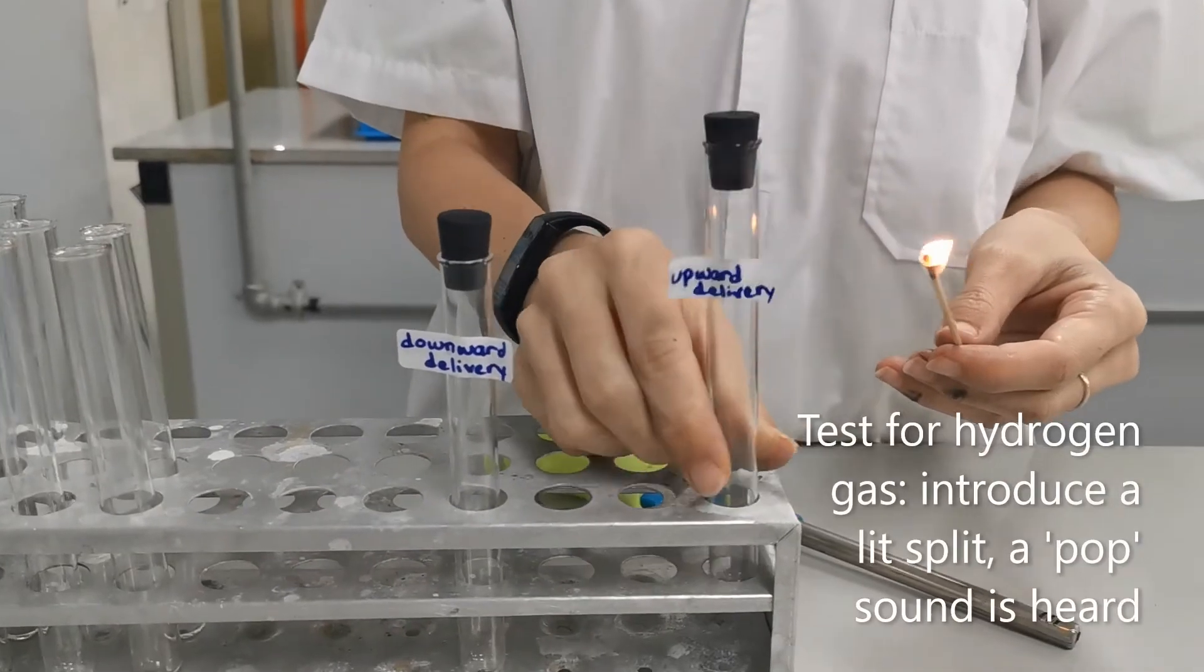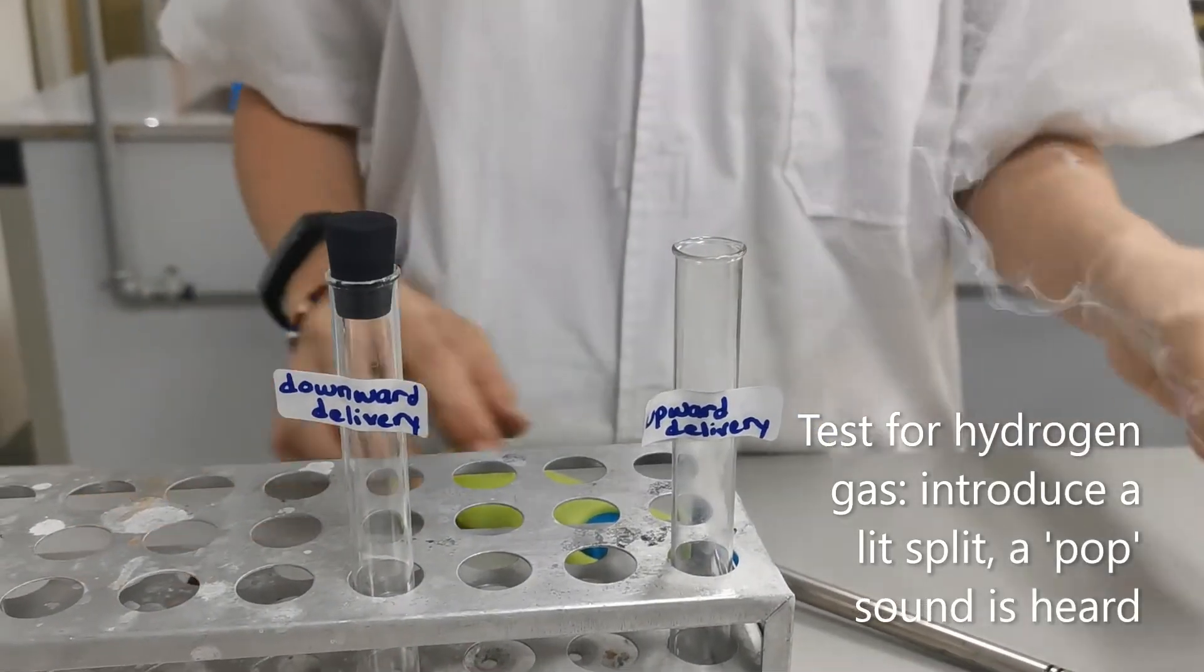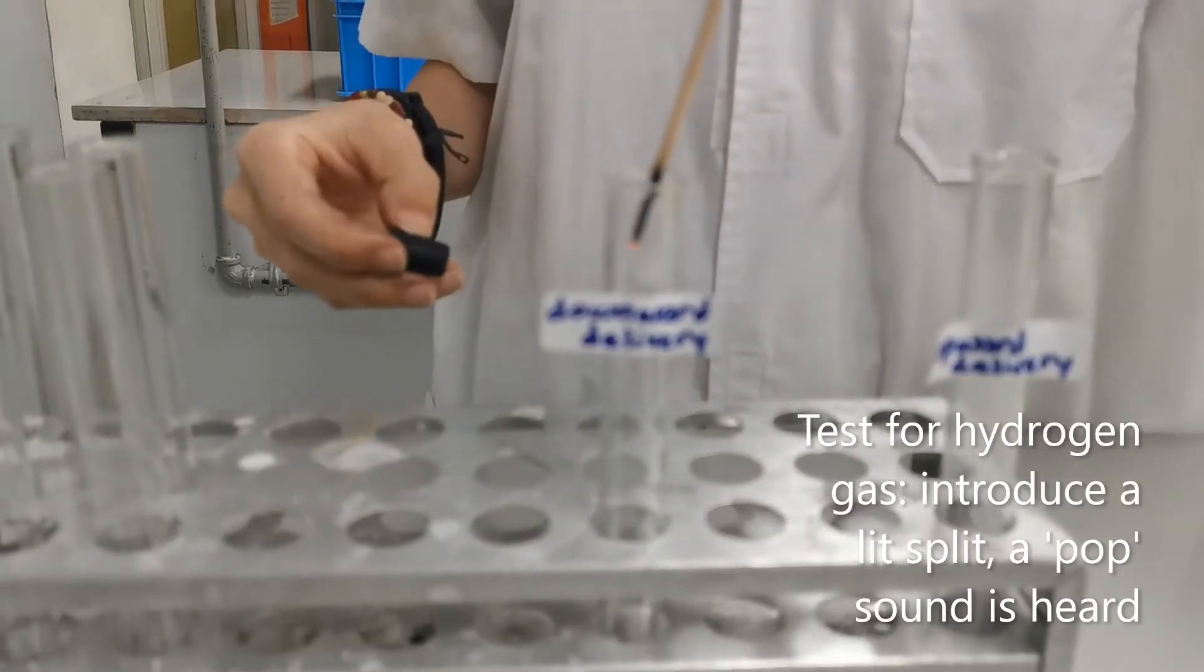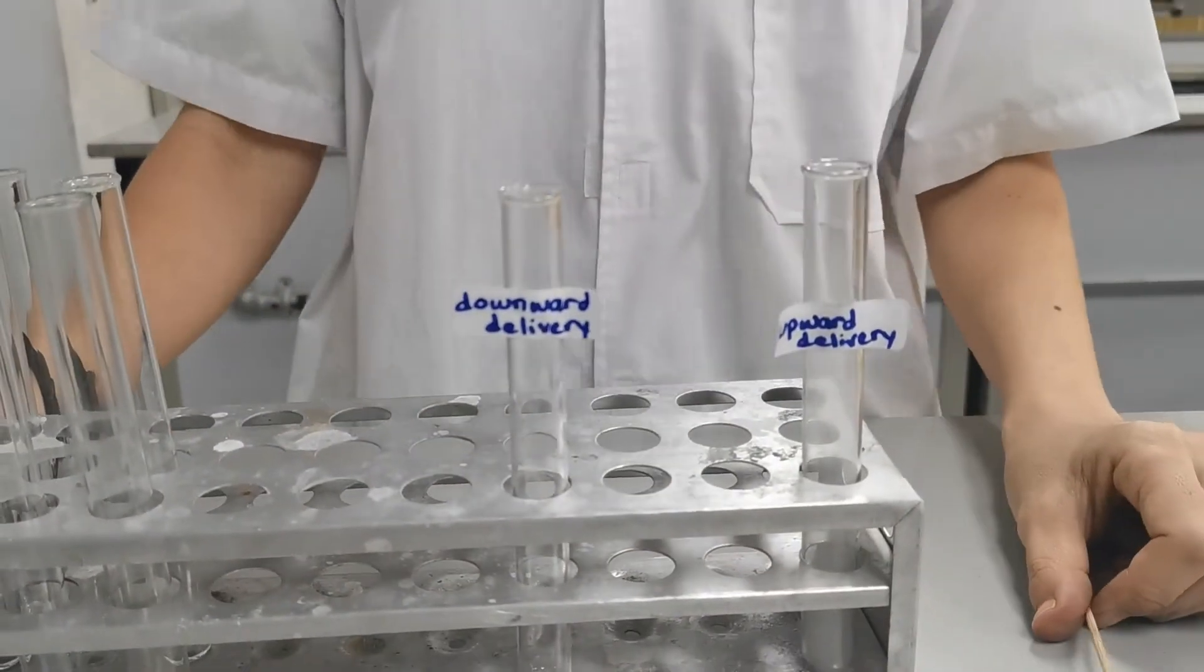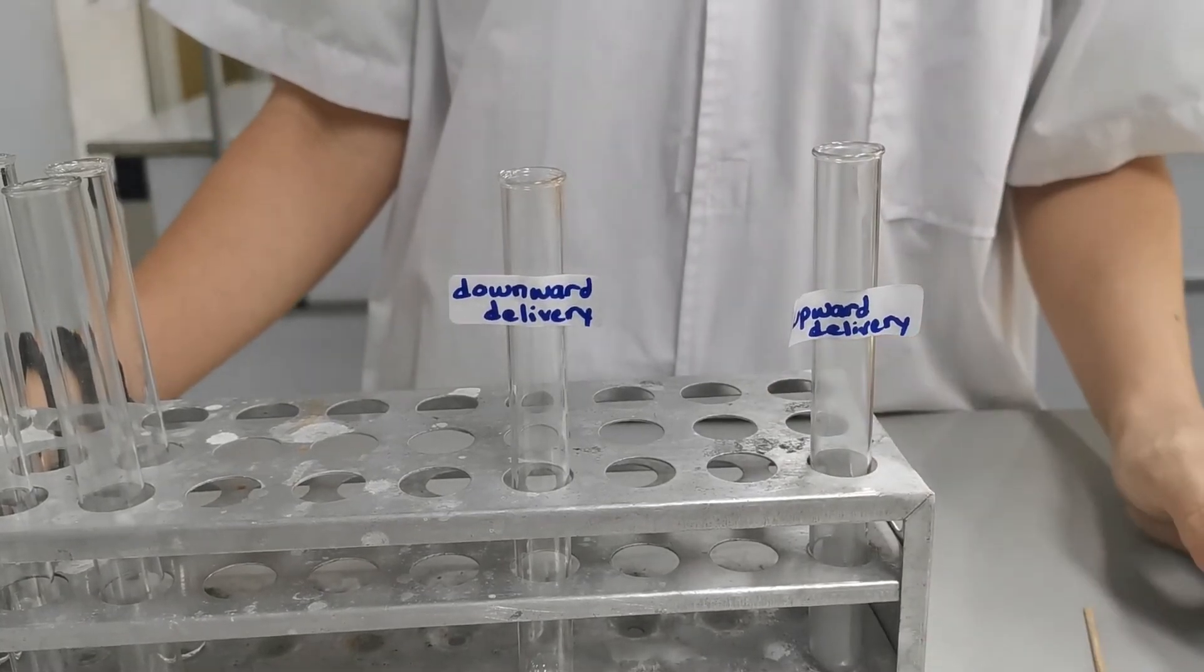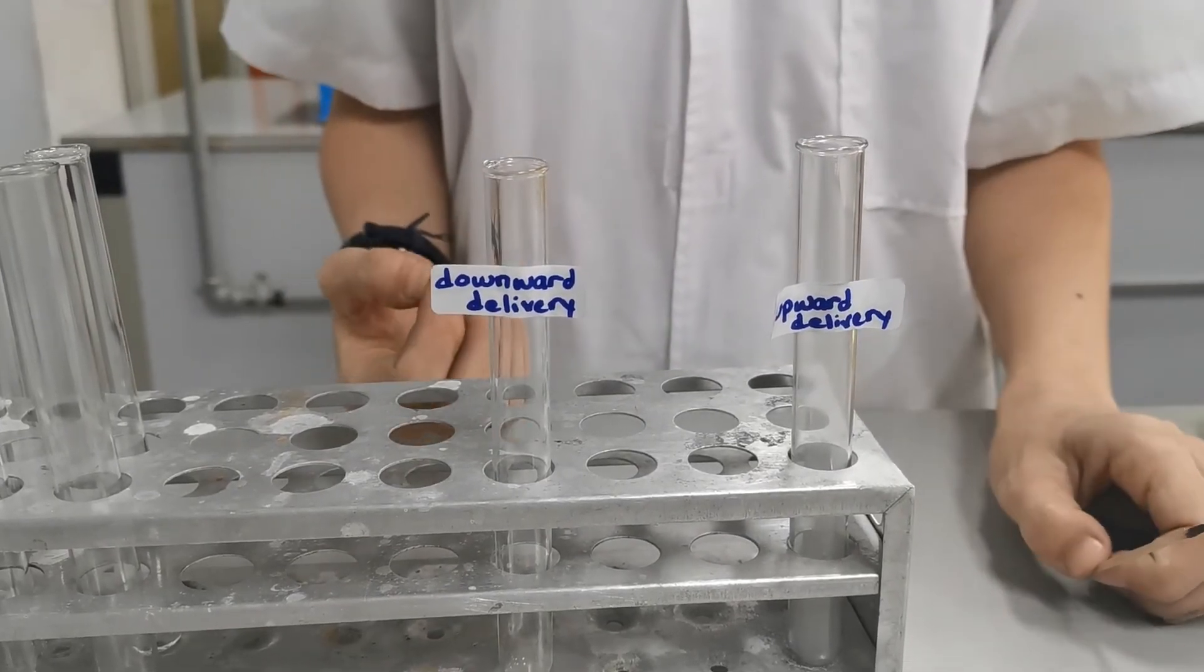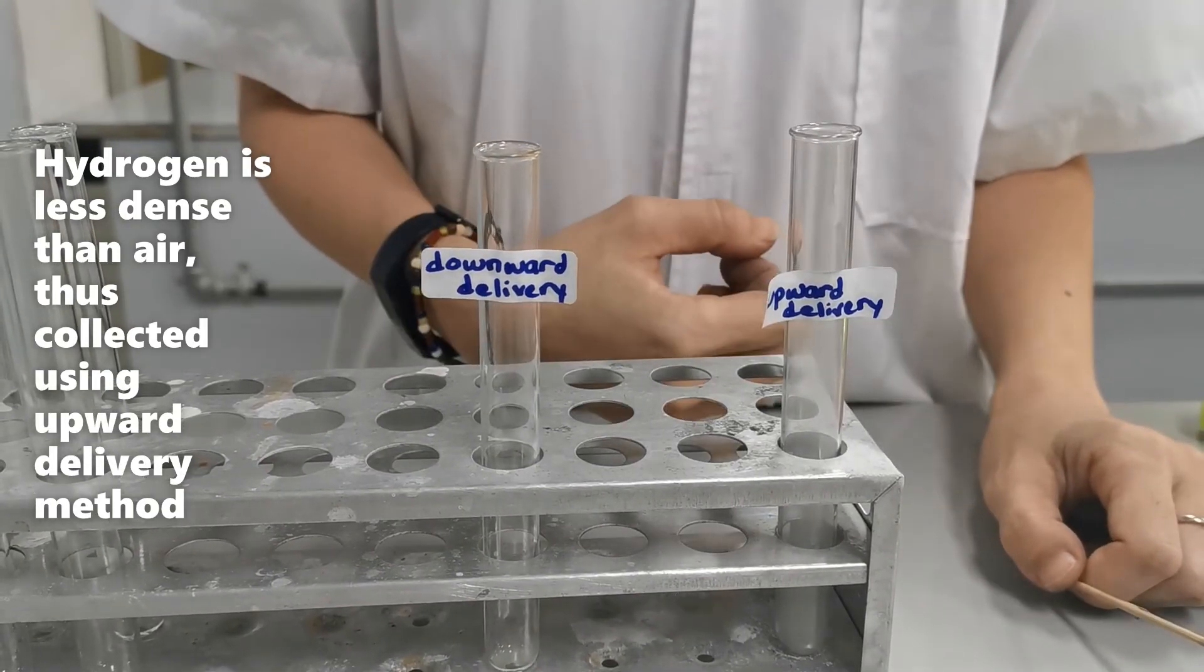Let's compare which tube contains more hydrogen gas. We can see that the upward delivery method collected more hydrogen gas because we heard such loud noise, a pop sound. But downward delivery method did not give us that pop sound. So for hydrogen collection, upward delivery is much more effective.